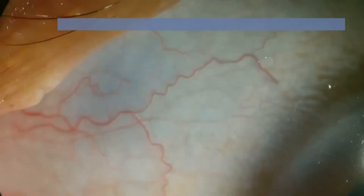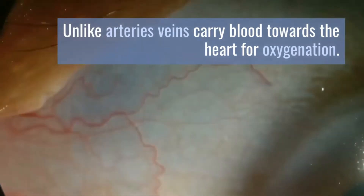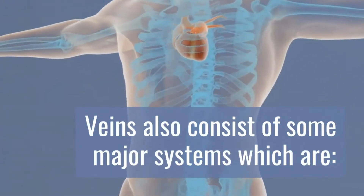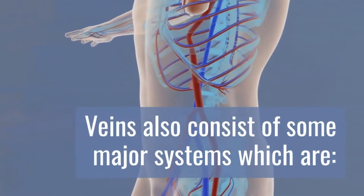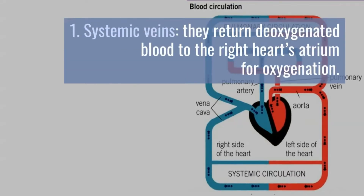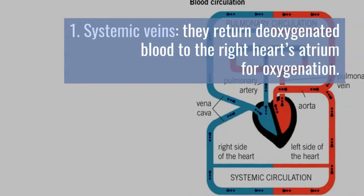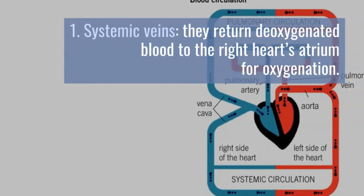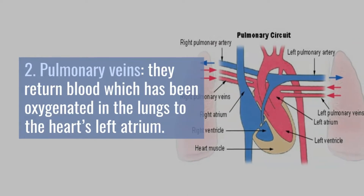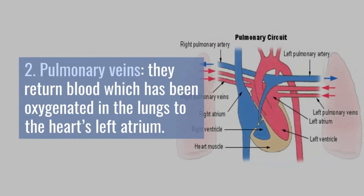Unlike arteries, veins carry blood towards the heart for oxygenation. Veins also consist of some major systems. First, systemic veins: they return deoxygenated blood to the right heart's atrium for oxygenation. Second, pulmonary veins: they return blood which has been oxygenated in the lungs to the heart's left atrium.